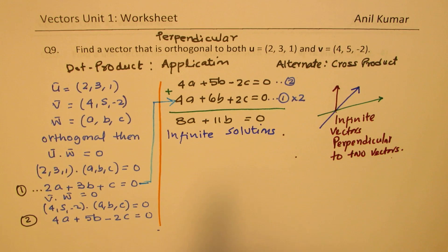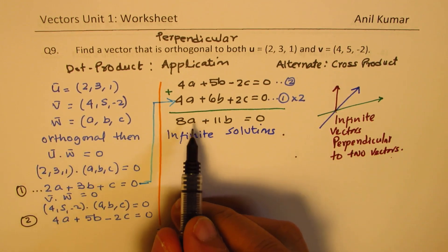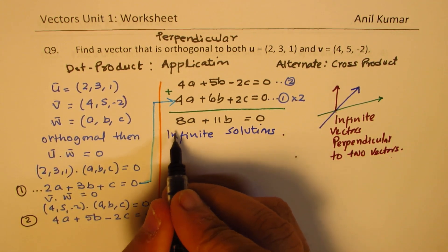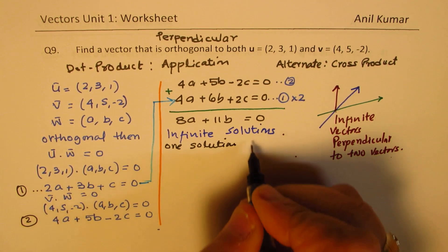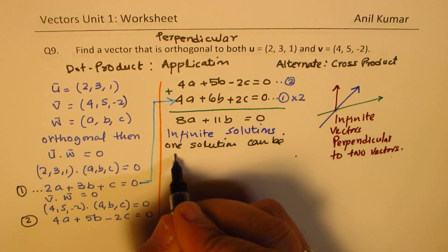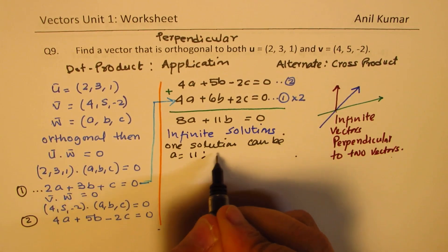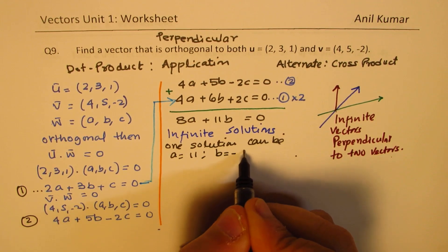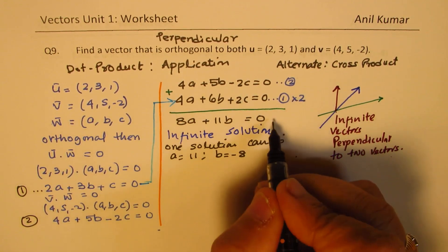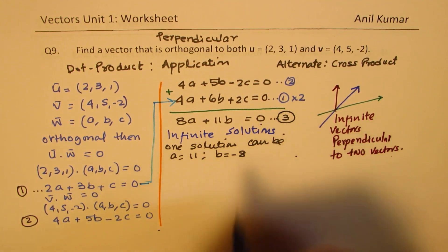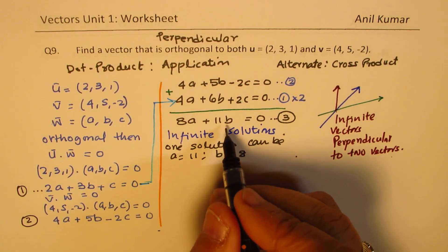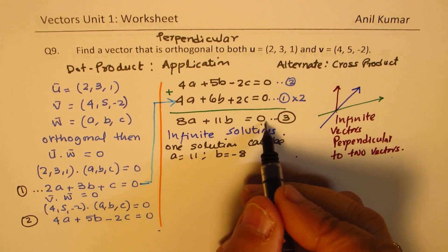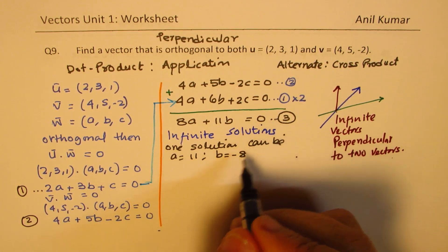We have a parametric solution, so we can substitute some values of a and b. One solution is to use a=11 and b=-8. If you substitute 11 for a and -8 for b into 8a + 11b = 0, you get 88 - 88 = 0. So we get these values.